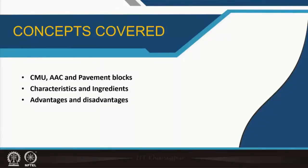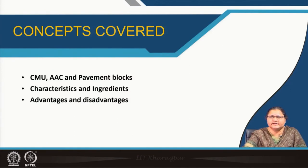You see pavement blocks in parking areas, walking areas, market places, and footpaths. These are called pavement blocks which are also precast items or precast concrete units. Let us move forward with knowing these items — how they look, where they are used, what are their characteristics, what ingredients they are made of, and gradually their uses, advantages and disadvantages.